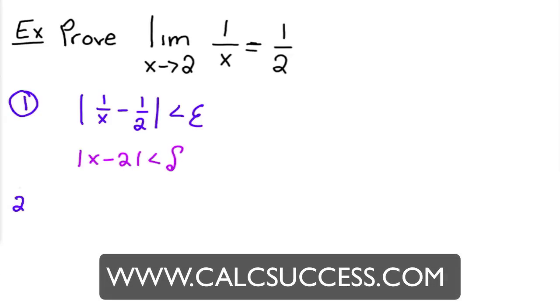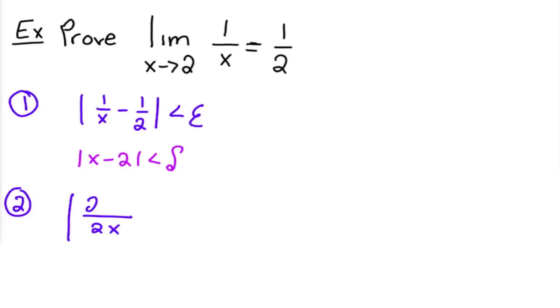Now I need to somehow turn this guy so that it includes x minus C. So how about if we combine those two into one fraction with the denominator of 2x? So then I would have 2 minus x, which is actually,